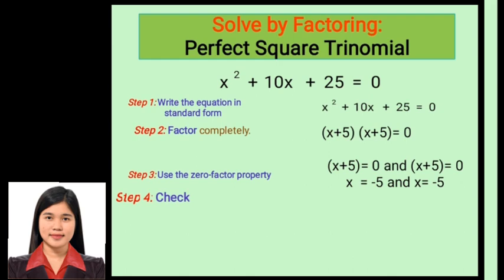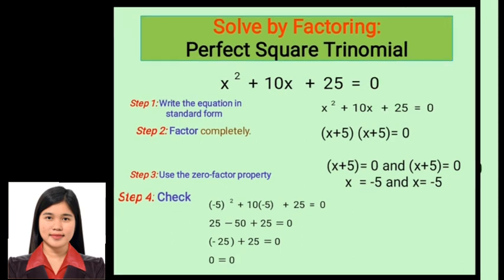Both roots are negative 5. Substituting into the original equation: (negative 5)² plus 10(negative 5) plus 25 equals 25 minus 50 plus 25, which gives negative 25 plus 25 equals 0. Our answer is correct.